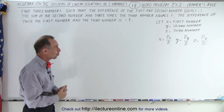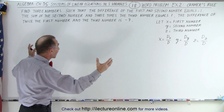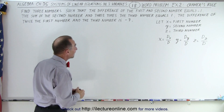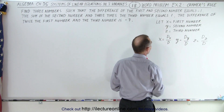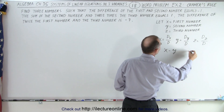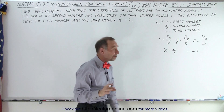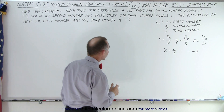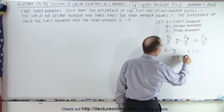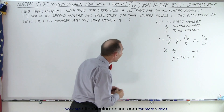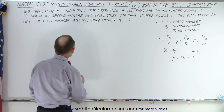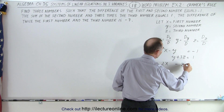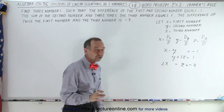First, we need to find three equations relating the three variables. The difference of the first and second number equals negative 1, so x minus y equals negative 1. The sum of the second number and three times the third equals 1, so y plus 3z equals positive 1. And twice the first number minus the third number equals negative 7, giving us 2x minus z equals negative 7.